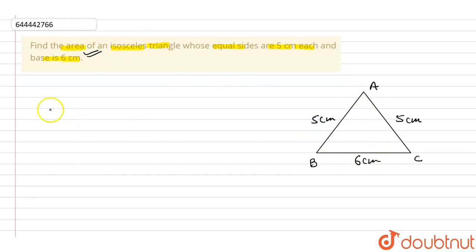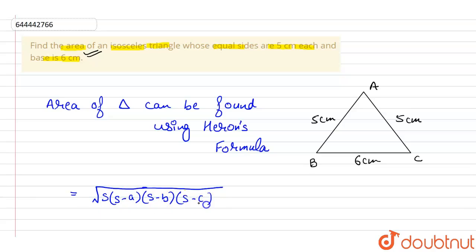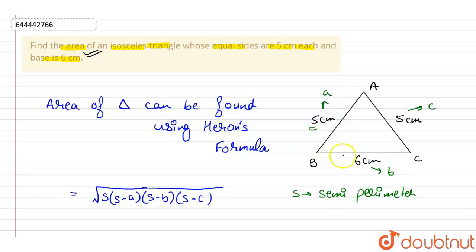Since 3 sides are given, the area of the triangle can be found out using Heron's formula. The Heron's formula says the area equals the square root of S into (S minus A) into (S minus B) into (S minus C), where S is the semi-perimeter of the triangle, and A, B, and C are the respective sides — that is, A is 5 cm, B is 6 cm, and C is 5 cm.